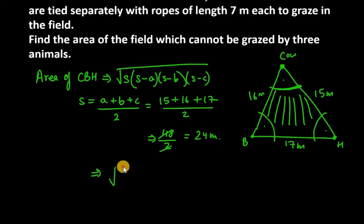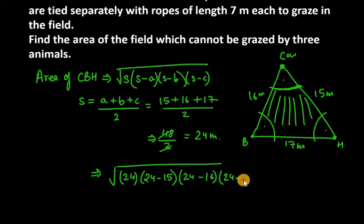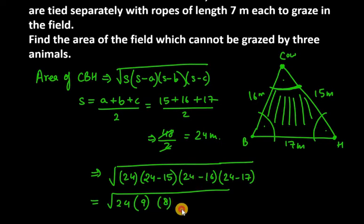So let's find root first. So S is 24. S minus A is 24 minus 15. Third is 24 minus 16. Then last is 24 minus 17. So now we have 24 as the first term. 24 minus 15 is 9. Then we have 24 minus 16, it is 8. Then we have 24 minus 17, it is 7.